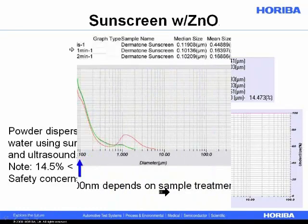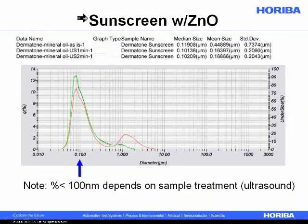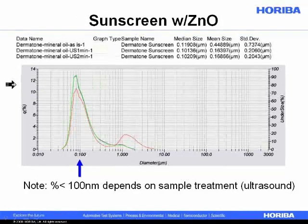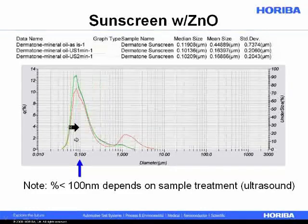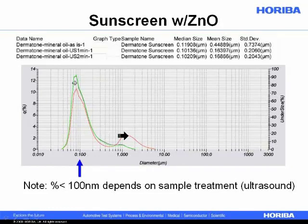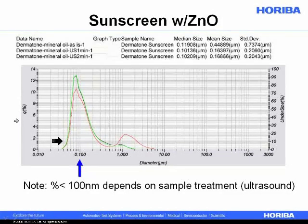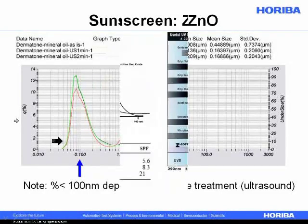Another material we could add to our cosmetics to give an SPF factor would be zinc oxide. This result comes from going to a store and buying a sunscreen that contained zinc oxide. We measured it without ultrasound and then with ultrasound while preparing the sample. A significant portion of this is down below 100 nanometers, and the percent under 100 nanometers depends on how we measure the sample — specifically, should we use ultrasound or not?